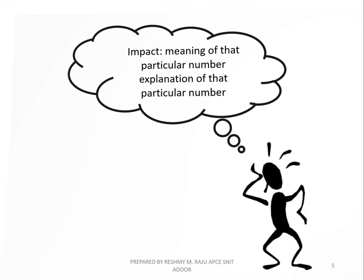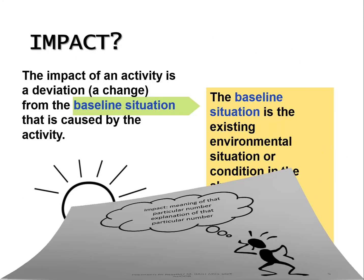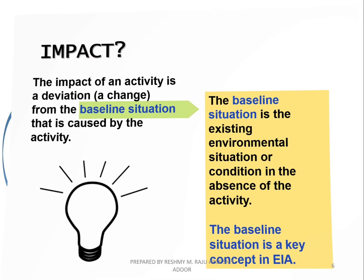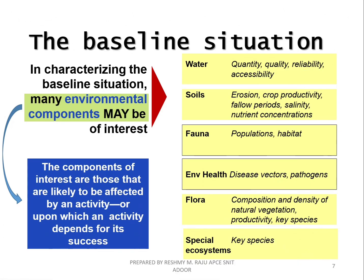EIA is the analysis and study of impacts. An impact can be defined as a deviation or a change from the baseline situation that is caused by a particular activity or project. If there is no baseline and no activity, we need to establish that baseline situation first, so we can understand what change the activity will bring and how it will impact the environment.